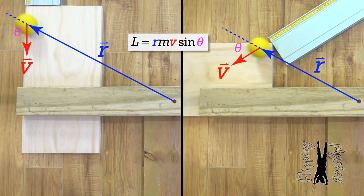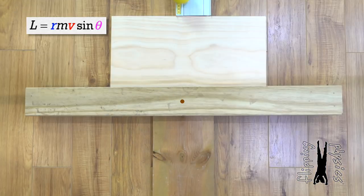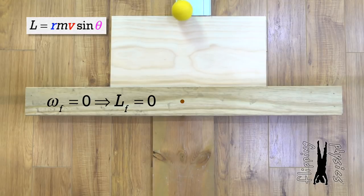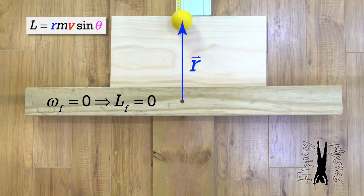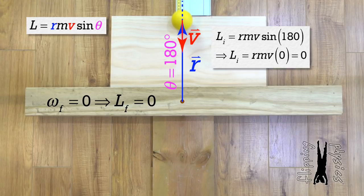That really is similar to the way the torque equation works: torque equals the r vector times force times the sine of the angle between those two vectors. Replace force with mass times velocity and you have the angular momentum of a point particle equation. Now watch what happens when the point particle is moving directly toward the axis of rotation. The r vector and linear velocity of the point particle are in opposite directions, so the angle theta between those two directions is 180 degrees. The sine of 180 degrees equals zero, so a point particle moving directly toward an axis of rotation has zero angular momentum.